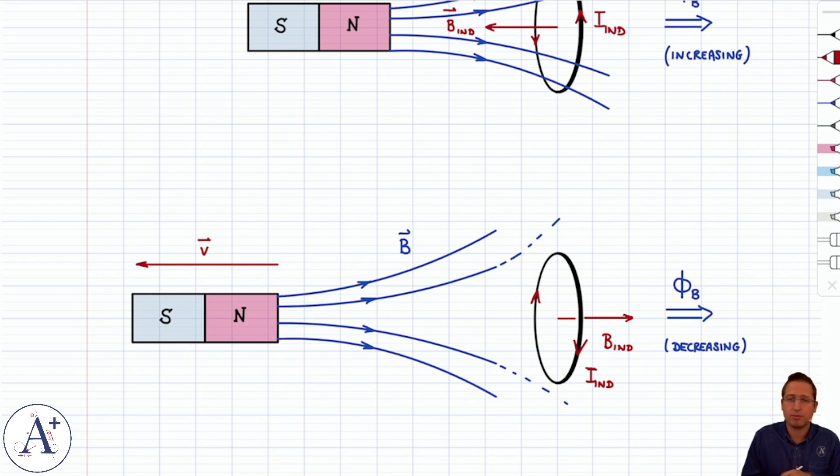Again, I_induced creates B_induced. It was easier for me, however, to first draw B_induced and then determine from that the direction of I_induced. It's just easier in practice to get all the directions to match up. But fundamentally, what's happening is that you get an induced current that creates B_induced, and the role of B_induced is to oppose the change in the magnetic flux.